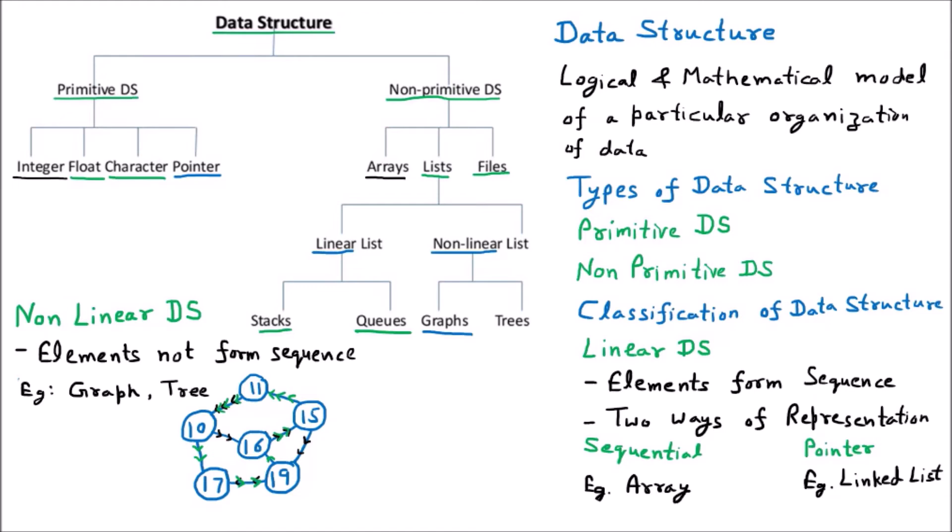Now we are taking the example of the non-linear data structure which is the tree. So talking about the tree, tree is having some kind of restriction. Just like we said a tree is having the two child. Now assuming that there is a 17 node, it can have two children only. Maximum two children.